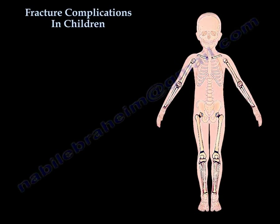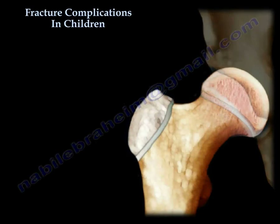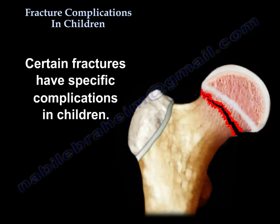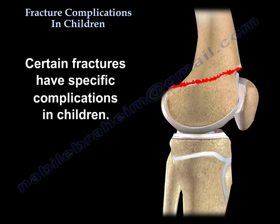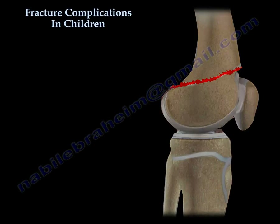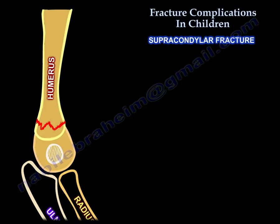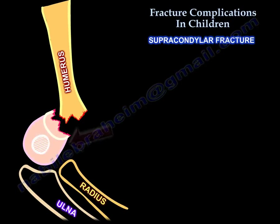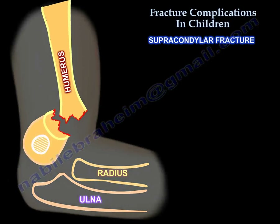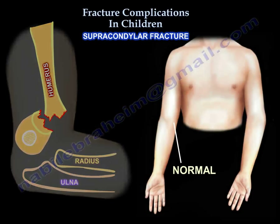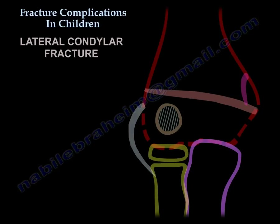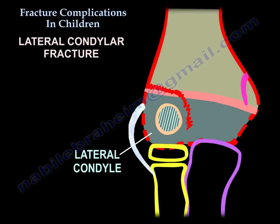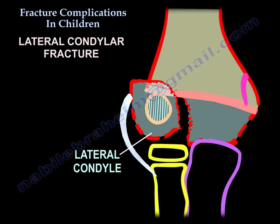Fracture complications in children — certain fractures give certain complications. Supracondylar fractures of the humerus will give cubitus varus and can also give Volkmann ischemic contracture. The lateral humeral condylar fracture will give cubitus valgus and nonunion.